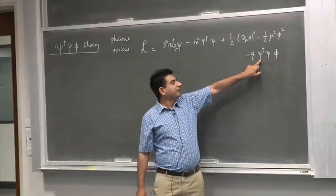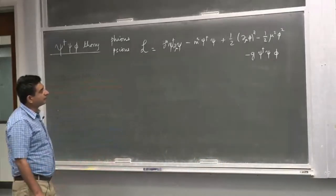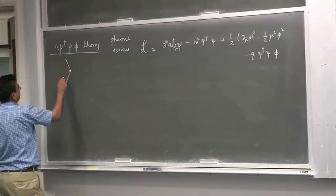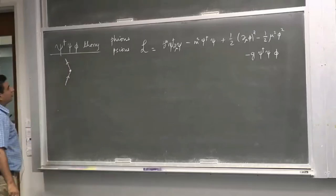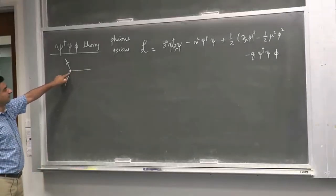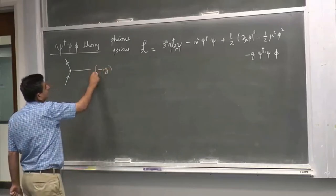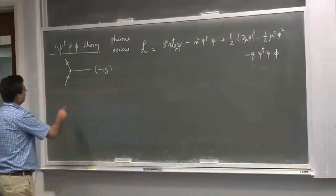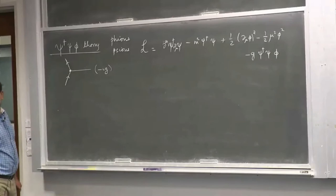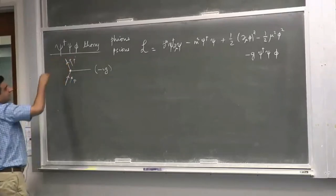If we replace ψ with the Dirac field and replace φ with the photon field, we get QED. The Feynman rules for such a theory: if I have a vertex connecting an incoming ψ-on, an outgoing ψ-on, and a φ-on, the corresponding term is minus i g, where g is the strength of this interaction. The arrow represents an incoming particle and this represents an outgoing particle.